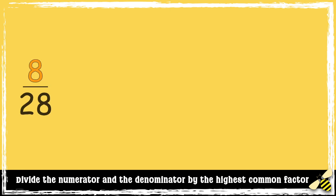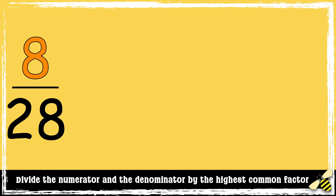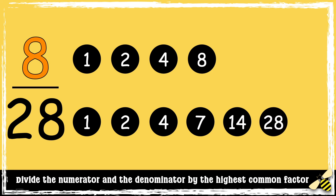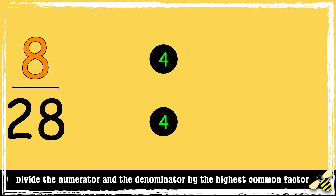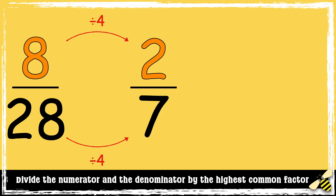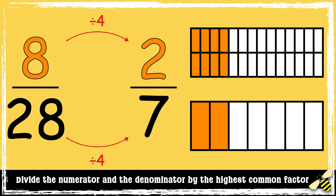Here's another one: 8 28ths. So first, we need to find the highest common factor. We have the factors of 8 and the factors of 28. The highest common factor is 4, so we can divide the numerator and the denominator by 4. 8 divided by 4 is 2, and 28 divided by 4 is 7. So 8 28ths in its simplest form is 2 7ths.